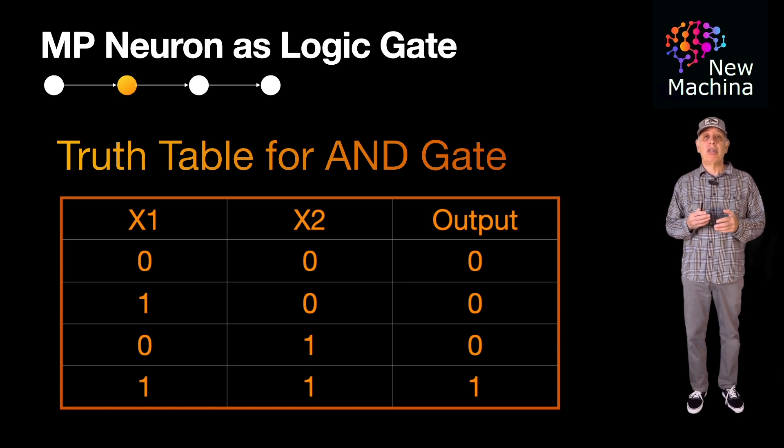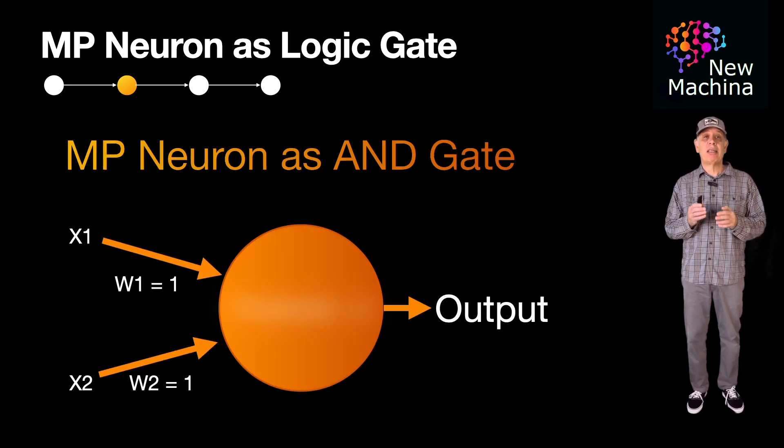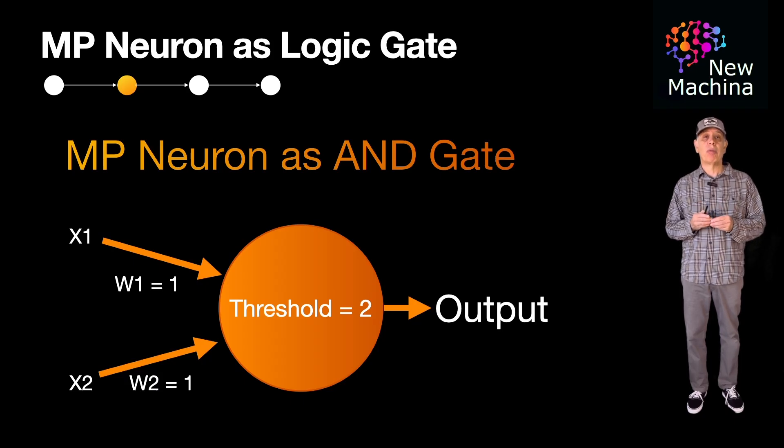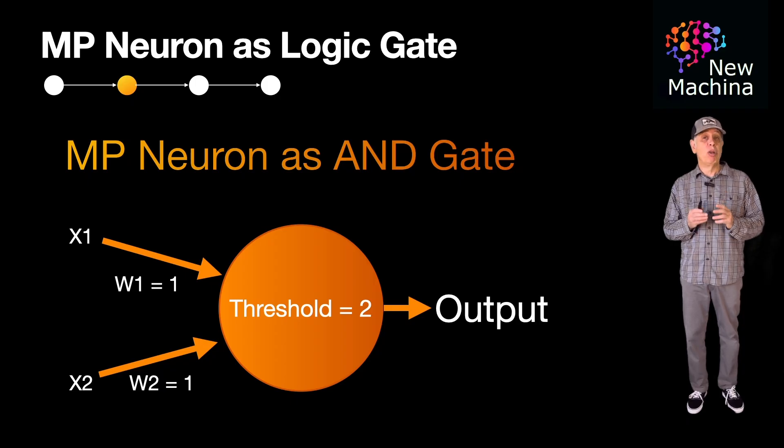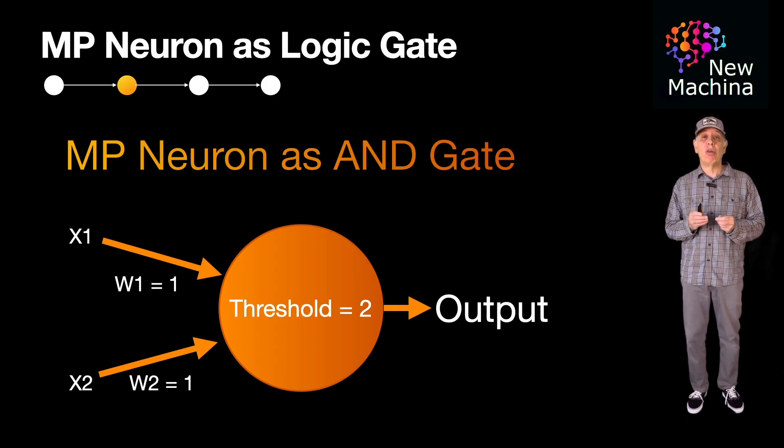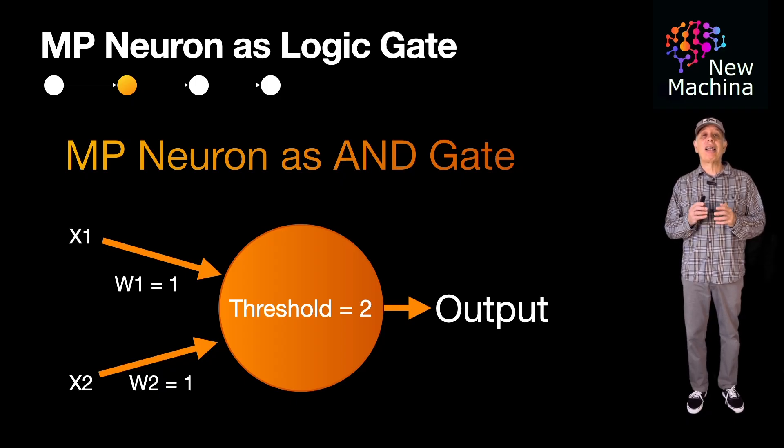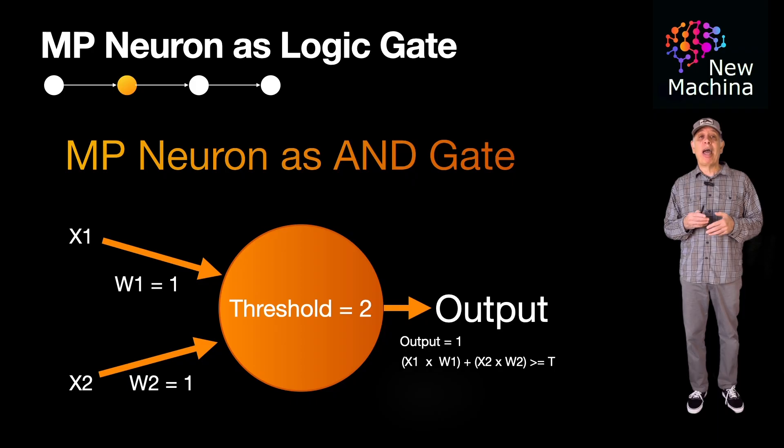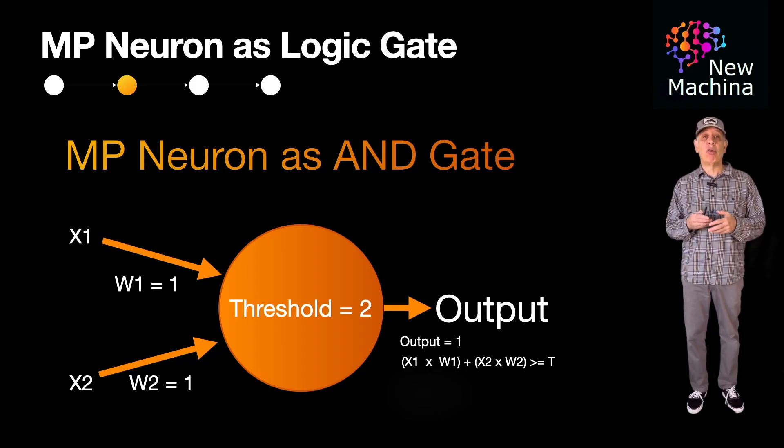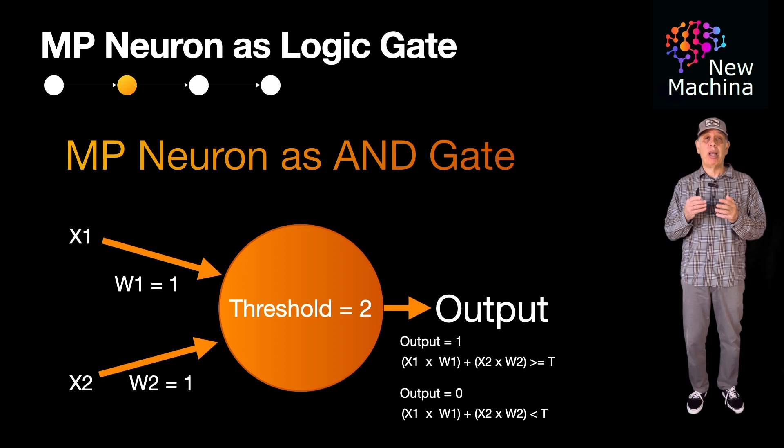To implement an AND gate using the MP Neuron, you will need to set the weights and threshold as follows. Set the input weight W1 to 1 and W2 to 1, and then set the threshold value to 2. So with these settings, let's look at the MP Neuron's activation conditions. The MP Neuron will output a value of 1 only if X1 times W1 plus X2 times W2 is greater than or equal to our threshold value of 2. Otherwise, it will output 0.